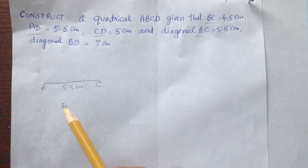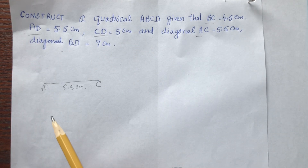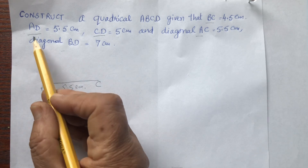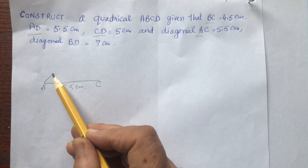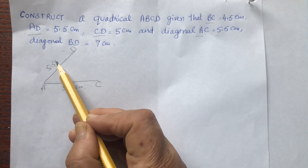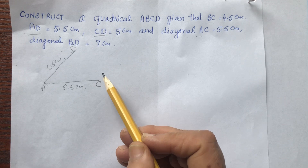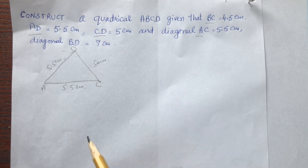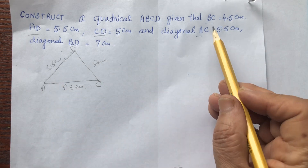Now start with the other sides. There are three sides: AB, AD, and CD. Let's take side AD, which is equal to 5.5 centimeters, and draw it like this. The next side you can take is CD, which is equal to 5 centimeters.